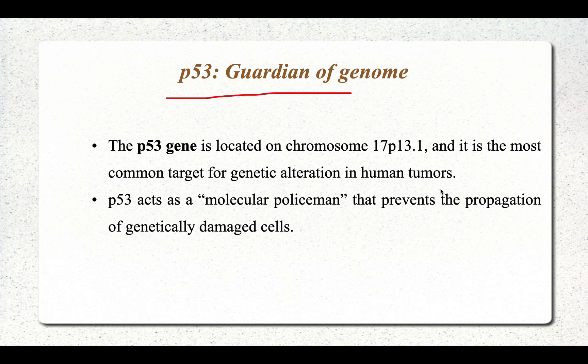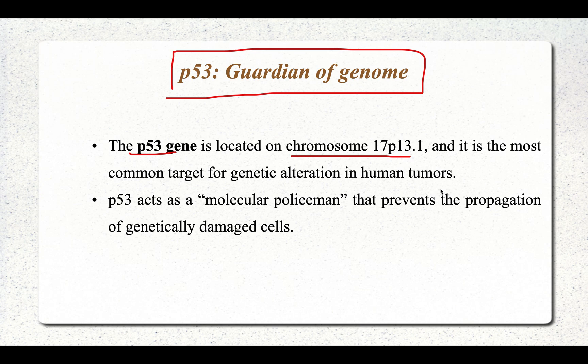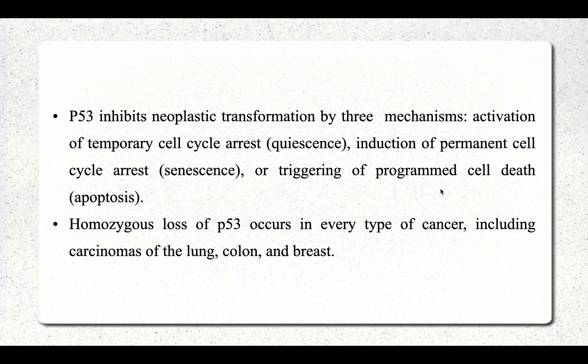The next important gene is the P53 gene, well known as the guardian of the genome. It is a very important tumor suppressor gene involved in virtually every neoplasia in the human body. P53 is located on chromosome 17, is the most common target in human tumors, and is also known as the molecular policeman because it prevents propagation of genetically damaged cells.